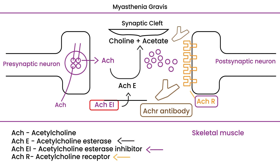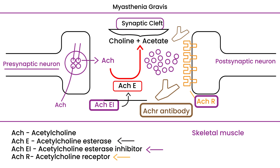Acetylcholine esterase inhibitors are the medications that treat myasthenia gravis. What they do is inhibit the enzyme acetylcholine esterase. When you inhibit that enzyme, you don't get the breakdown of acetylcholine, so more acetylcholine stays in the synaptic cleft and more of it has a chance of binding to the acetylcholine receptor. Even if there are many acetylcholine receptor antibodies blocking the receptors, the more acetylcholine you have in the synapse, the more chance you have of it passing from neuron to neuron.